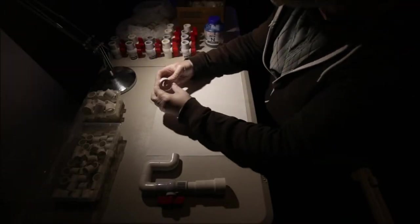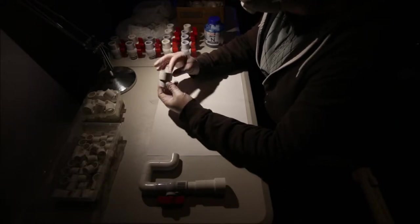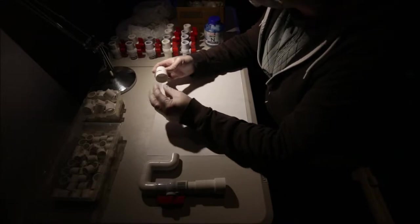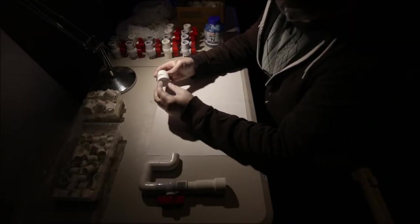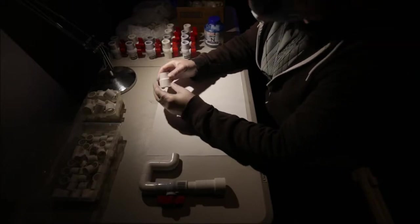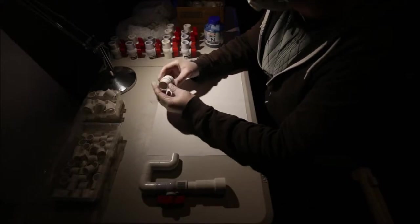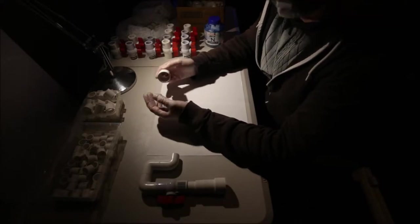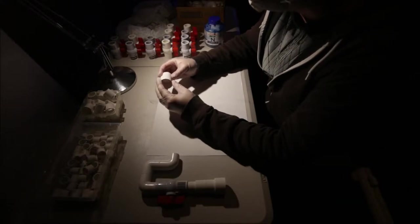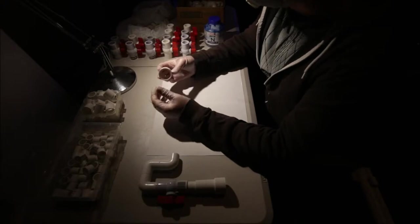We start off with these reducer couplings, so this is a 25 mil to 20 mil coupling. It's going to be coming off a 25 mil T. I'm not going to show you that bit tonight because I haven't cut all the 25 mil pipe yet. My PVC cutter isn't big enough to cut that pipe, unfortunately.